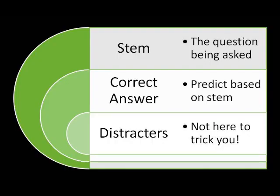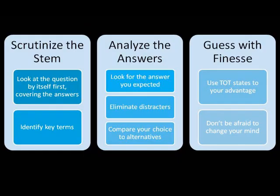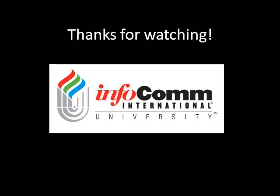Let's review. A question is made up of three parts: the stem, the correct answer, and the distractors. Remember, the distractors aren't there to trick you — don't take them into account when answering the question. Instead, focus on the stem. With every question, follow this strategy: scrutinize the stem by looking at the question by itself first, covering the answers, and identifying key terms. Analyze the answers by looking for the answer you expected, eliminating distractors, and comparing your choice to alternatives. And guess with finesse — use TOT states to your advantage, and don't be afraid to change your mind. Now it's your turn: try applying these strategies to practice problems. Thanks for watching.